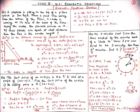Substituting these values, we get x² = 9² + (27 − x)², which gives x² = 81 + 729 + x² − 54x. The x² terms cancel out, and on solving we get x = 15.